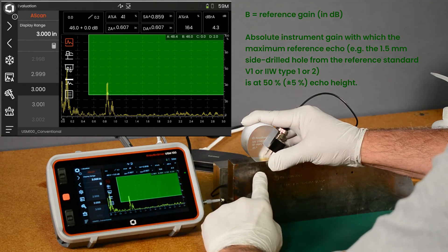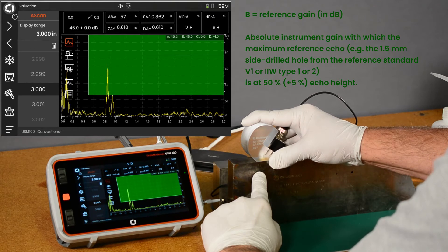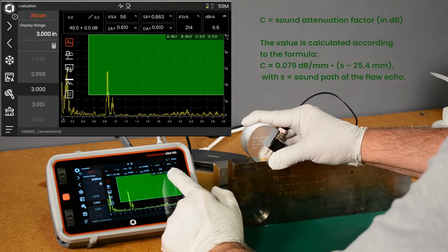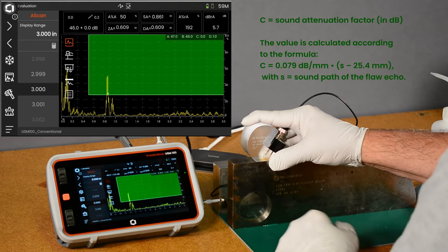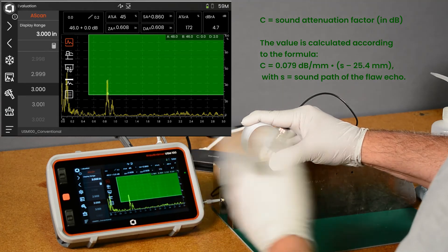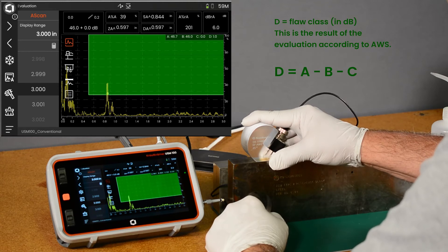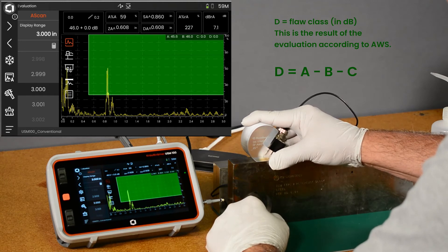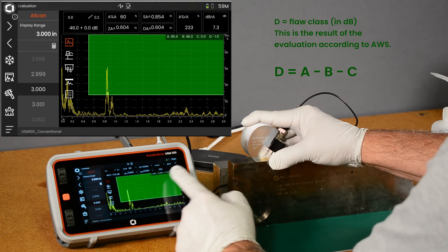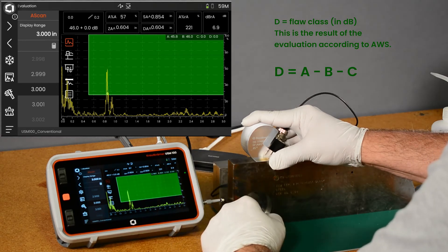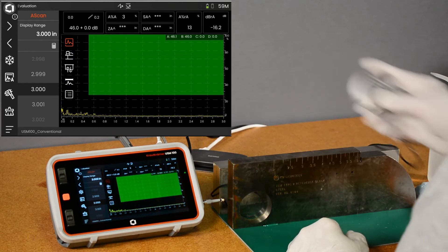Readout B is our reference amplitude. When we hit calibrate, what gain did it take to hold that indication at 50% screen height? That was our recorded reference gain. C is our material attenuation compensation. Because we have less than an inch of sound path here, C is going to be zero. Anything under an inch, we're not adding any material attenuation correction in the equation. D is our flaw class, which is now saying zero. We have our gain, we're back on our calibrated hole giving us a class of zero. We're at essentially the same gain with no material attenuation correction, so now we're all calibrated.